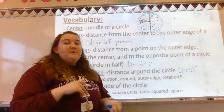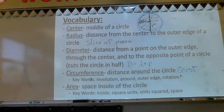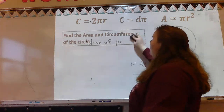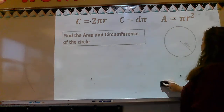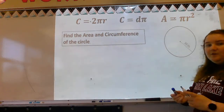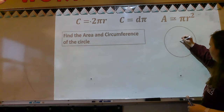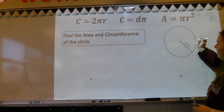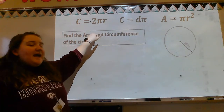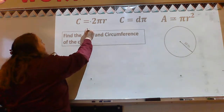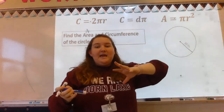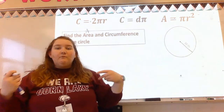Let's work some practice problems so we can actually use these vocabulary words. Area and circumference — that's what we're looking for today. The problem says find the area and circumference of the circle. They give you a picture of a circle which has a line down the center and the number 30 inches on it. For area, we're going to use a capital A. I've put three formulas up here — a formula is a format or a basis of where to start your problem.